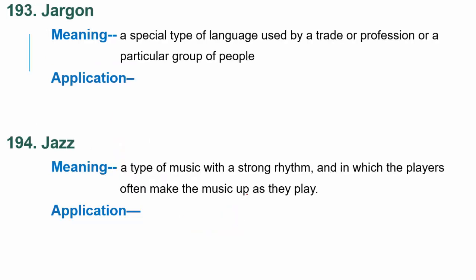Next word is jargon. Jargon is a special type of language used by a trade or profession or a particular group of people. Ek alag type ki language hoti hai jo kisi trade mein ya kisi profession mein hum use karte hai, ya koi particular group of people use karta hai. People are confused by computers because they don't understand the jargon — log confused rehte hai computers se kyunki unhe jargon samajh mein nahi aati.